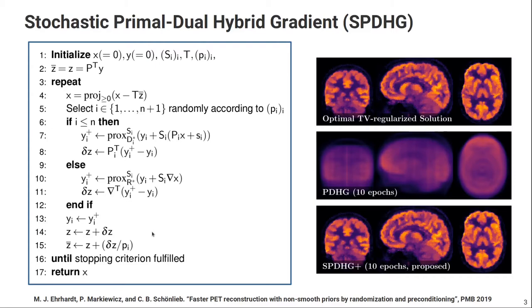In 2019, Matthias Ehrhardt et al. published an algorithm called stochastic primal-dual hybrid gradient that allows to solve the non-smooth optimization problem very efficiently. It's a modification of the primal-dual hybrid gradient algorithm that allows to use subsets, and it could actually show that with only 10 complete forward and back projections you get very decent convergence as shown here on the right for a problem that uses TV prior.